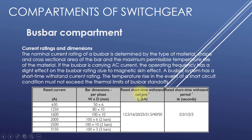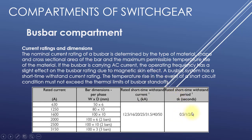The table also shows the rated short-time withstand current in kiloamperes. Possible ratings are 12.5, 16, 20, 25, 31.5, 40, or 50 kiloamperes. The rated short-time withstand period is also defined — for example, 16 kiloamperes for 0.5 seconds, 25 kiloamperes for 2 seconds, or 50 kiloamperes for 3 seconds. These parameters are given to the manufacturer, who accordingly prepares the switchgear design.